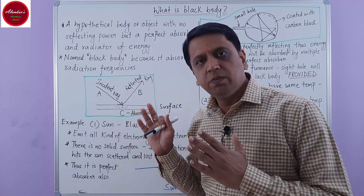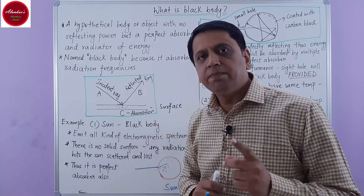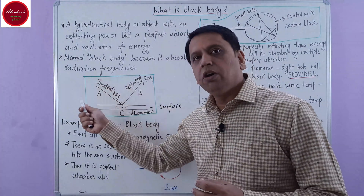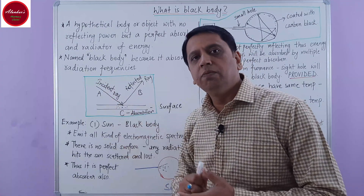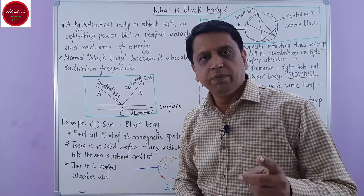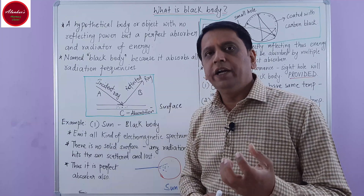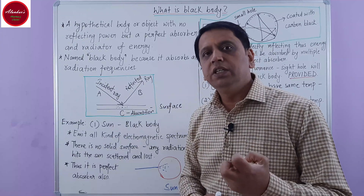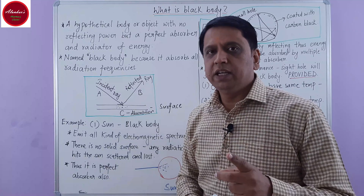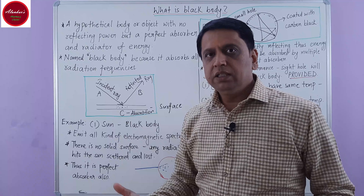According to the definition of black bodies, the first thing is that a black body is a perfect emitter — it emits all sorts of electromagnetic radiation. Another thing is that it absorbs all kinds of incident radiation but does not reflect anything. This is actually the definition of a black body.